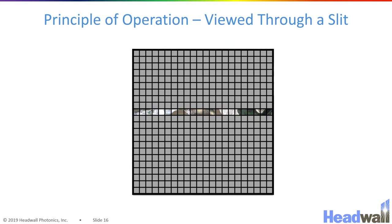Headwall's imaging spectrometers are push-broom imaging spectrometers that take an image of one sliver of the scene at a time. The image of the scene is projected onto a slit that cuts off all except for this one sliver of the scene for every frame gathered on the focal plane array, and therefore requires movement of some kind to collect the other spatial dimension.